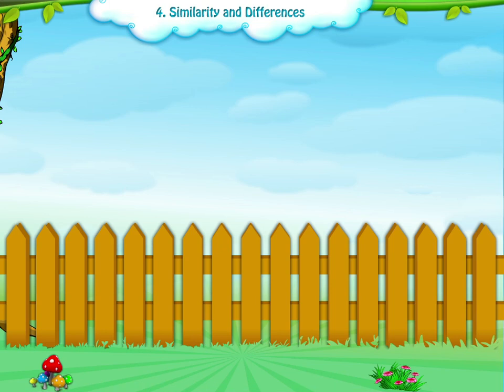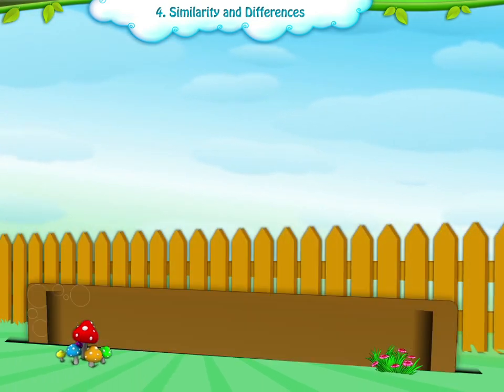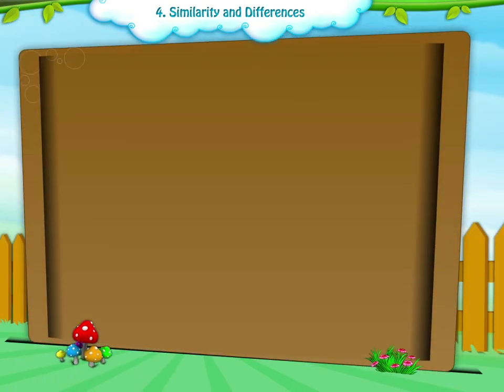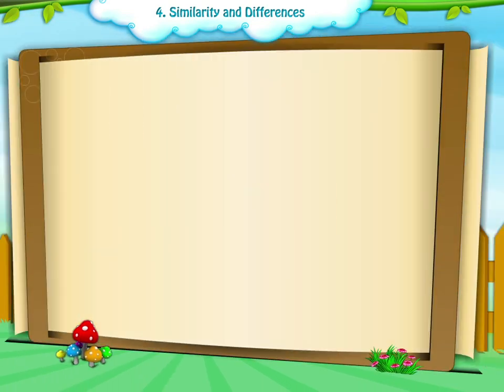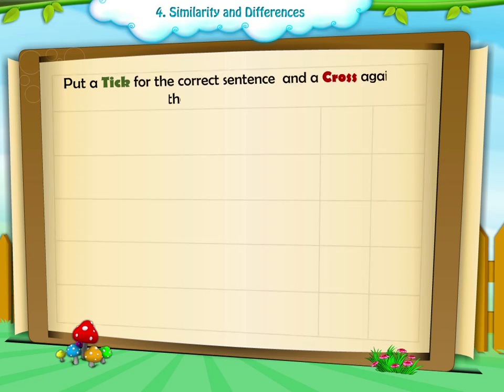Now we'll do an exercise to see how different we are from others. Put a tick for the correct sentence and a cross against the incorrect sentence.